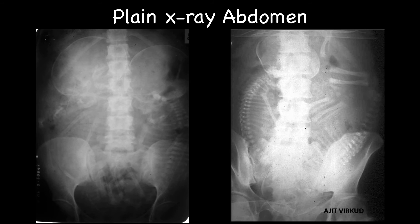If ultrasound is not available, plain x-ray of the abdomen can be used to confirm the diagnosis of twins or multiple pregnancies. During my OB/GYN residency and early clinical practice, there was no ultrasound, and we relied wholly on plain x-ray for diagnosis of multiple pregnancies — and we were quite good at it. Using plain x-ray of the abdomen, one can not only confirm the diagnosis in the later stage of pregnancy but also know the lie and presentation, diagnose conjoined twins, accidental triplets, rule out major congenital fetal anomalies, and look for polyhydramnios.